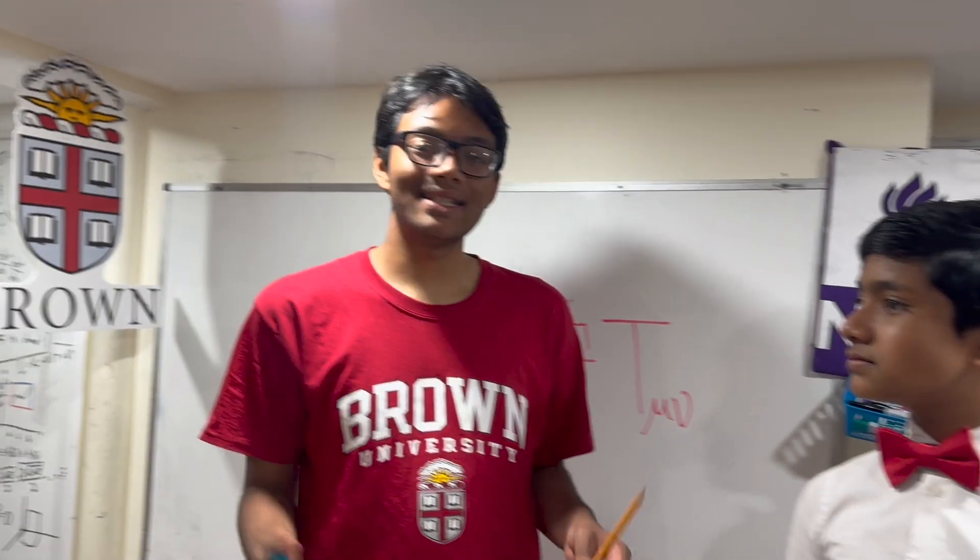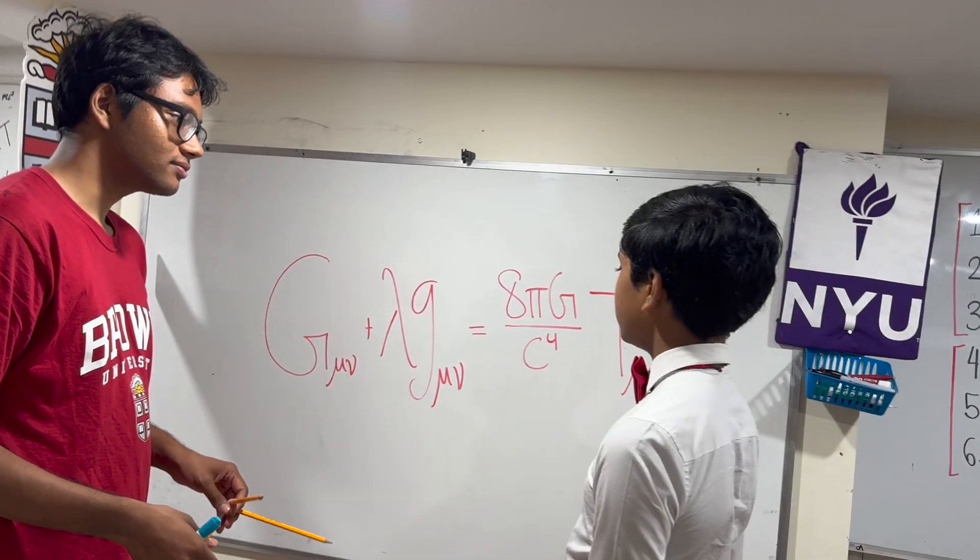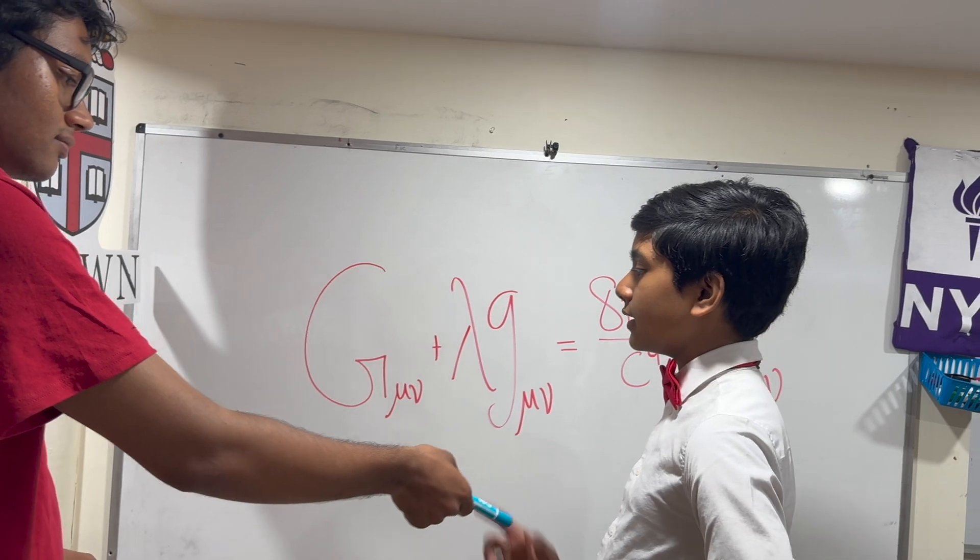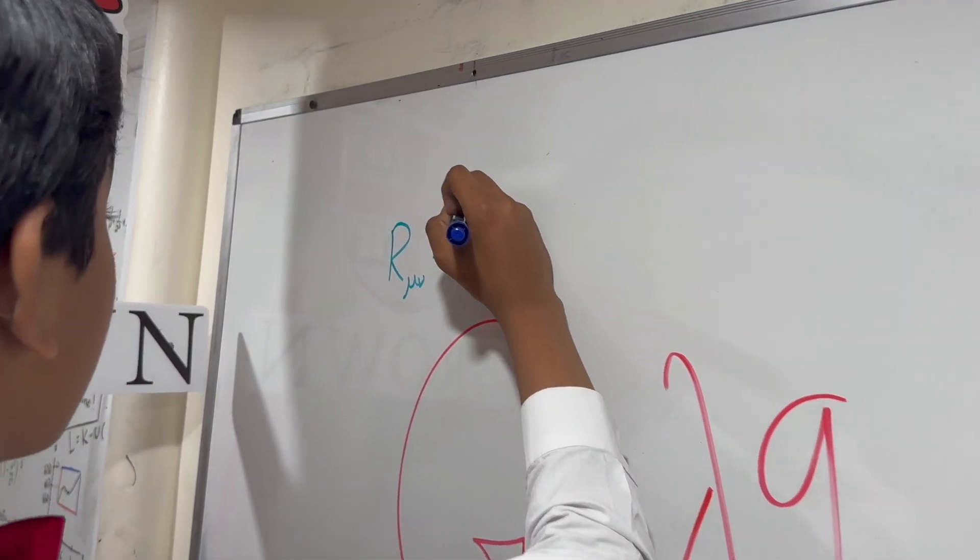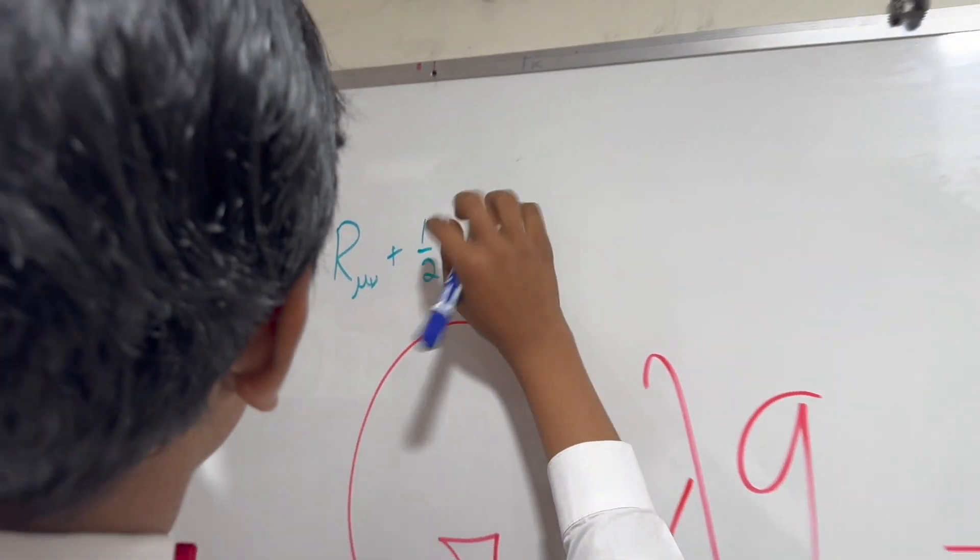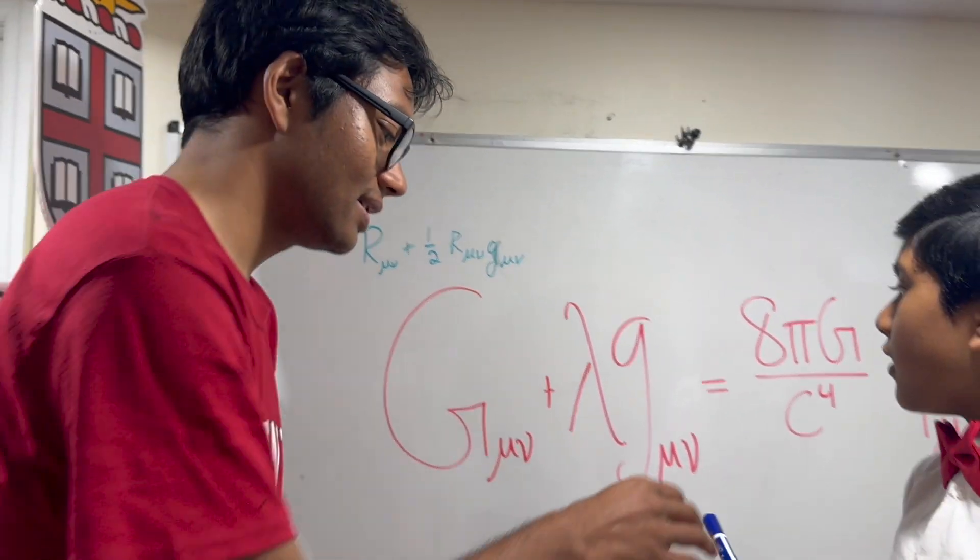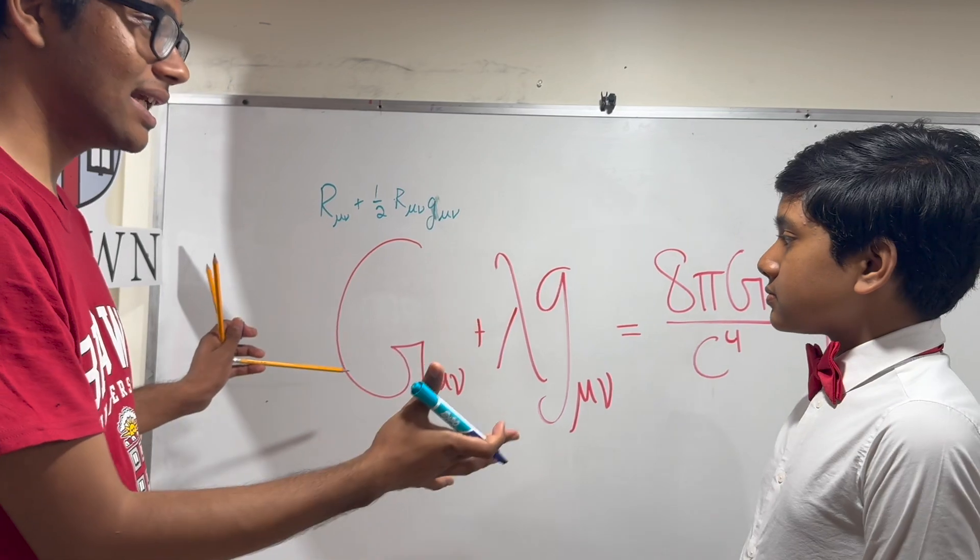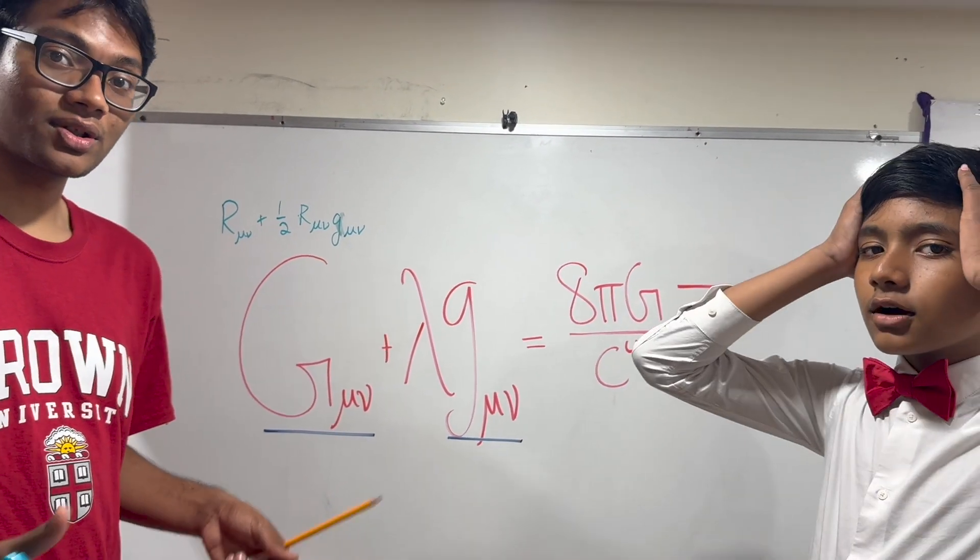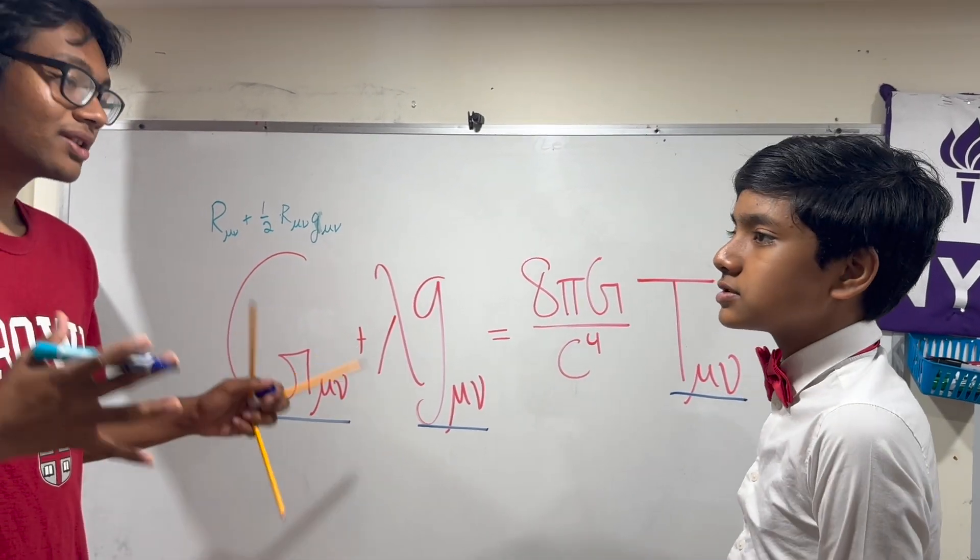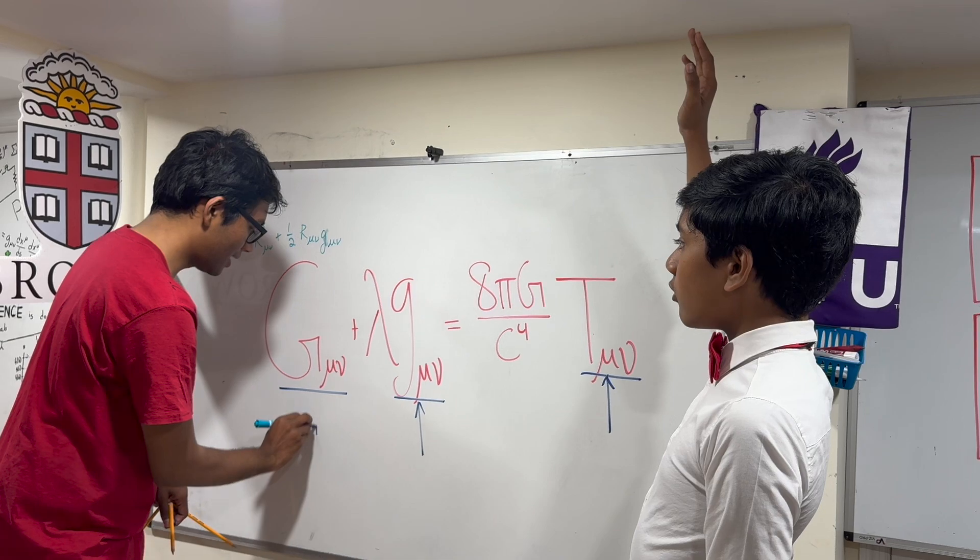So today we're going to be discussing tensors, which are the fundamental framework of general relativity. Now Saborno, what do we have behind this here? So this is a simplified form of the field equation. I believe it was something like the Riemann tensor or the Ricci tensor plus one half. The main idea here is that to understand how gravity works, we need to understand Einstein's field equation. And you can see there are one, two, three tensors, and they're all over Einstein's field equation. This is the one we're solving for, the metric tensor. So to understand the field equation, to understand gravity, we need to first understand these guys, the tensors. That's the motivation behind understanding tensors.